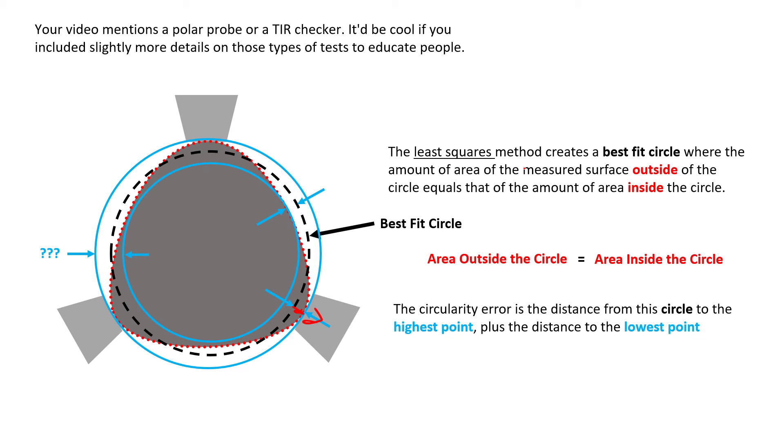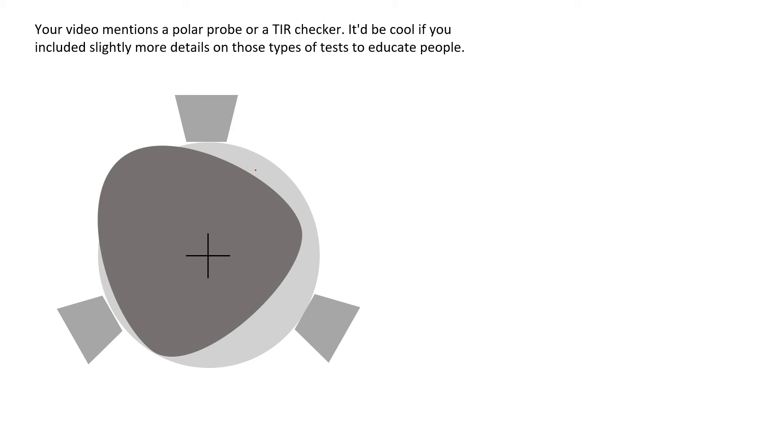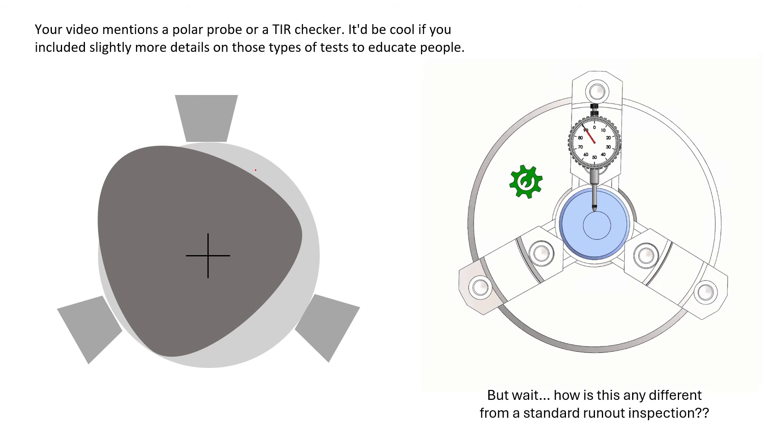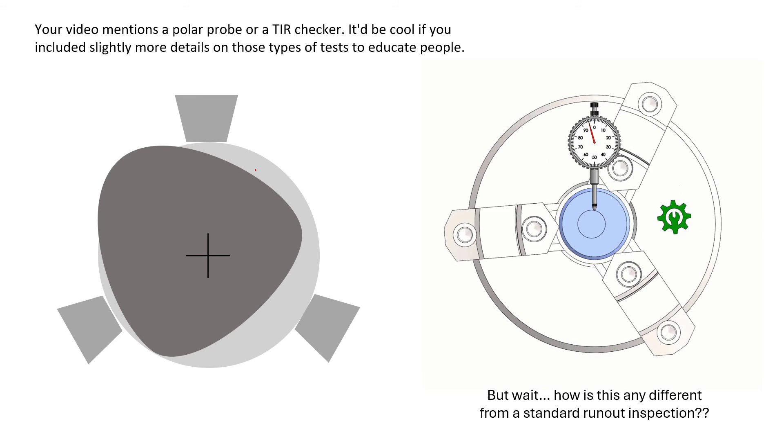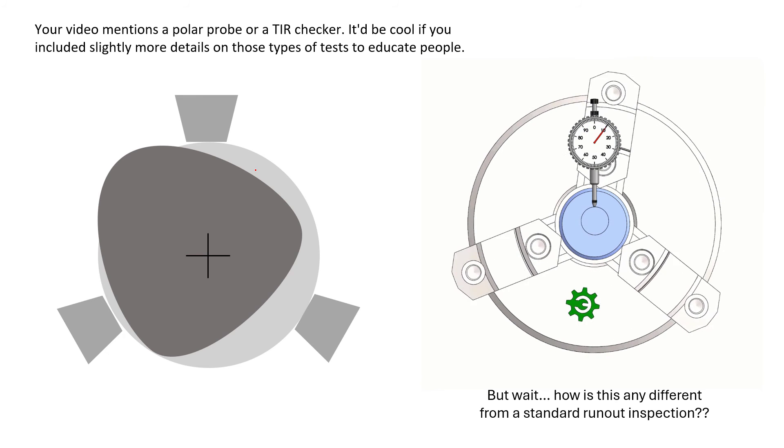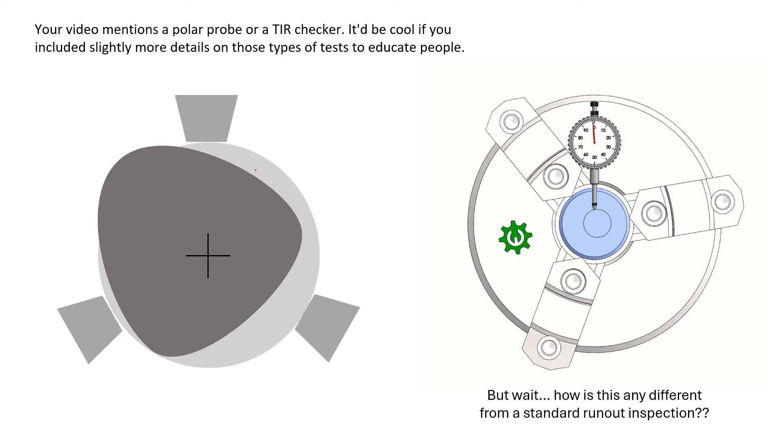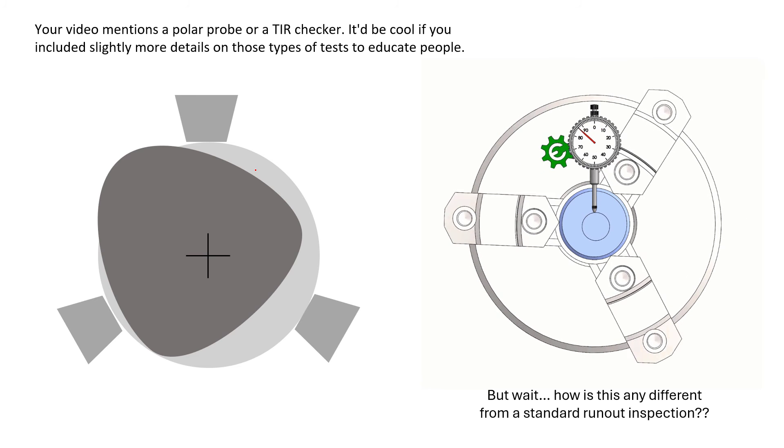So again, this is a real high-level way of picturing how those polar probes or those turn checks are able to understand the amount of circularity error with respect to the feature itself. Now you might be asking yourself, how is this not just runout? How can I not just put this part into a chuck and then rotate it and put an indicator on it and measure the full indicated movement? It seems like that's exactly what we just showed you there, the high points versus the low points.